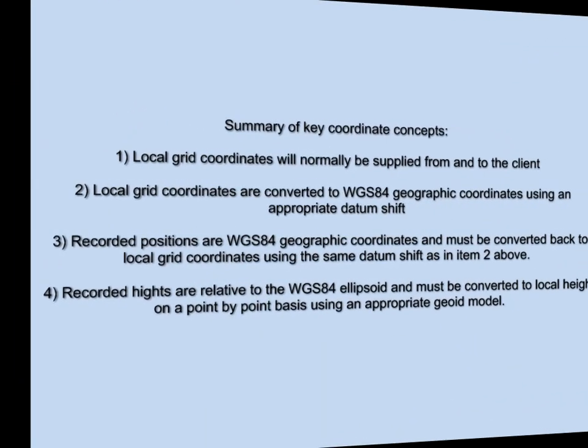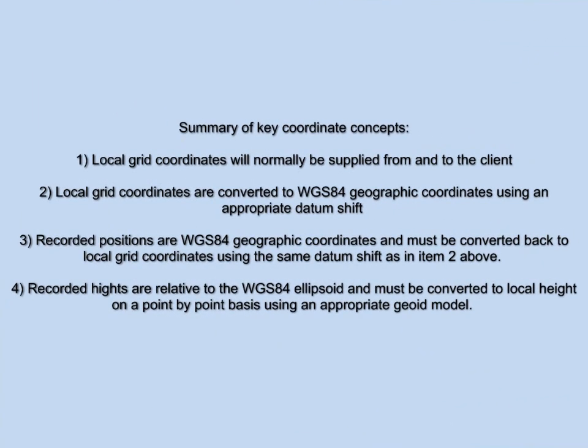A summary of key coordinate concepts includes the fact that local grid coordinates will normally be supplied from and to the client. Local grid coordinates are converted to WGS84 geographic coordinates using an appropriate datum shift. Recorded positions are WGS84 geographic coordinates and must be converted back to local grid coordinates using the same datum shift. Finally, recorded heights are relative to the WGS84 ellipsoid and must be converted to local height on a point-by-point basis using an appropriate geoid model.